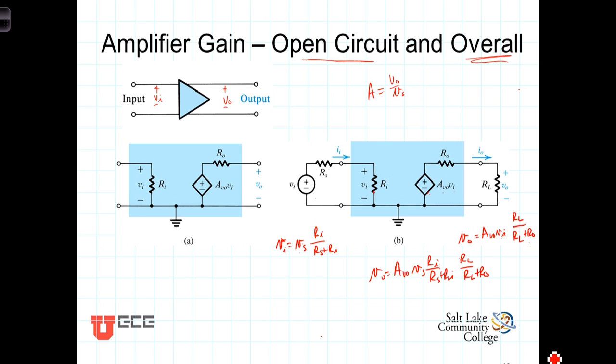With these two voltage dividers taken into account then, we can now form this gain term, the overall gain, which is equal to V_out divided by the signal voltage V_s, and that is equal to the open circuit gain multiplied by the voltage divider terms. And once again, this is called the overall gain.